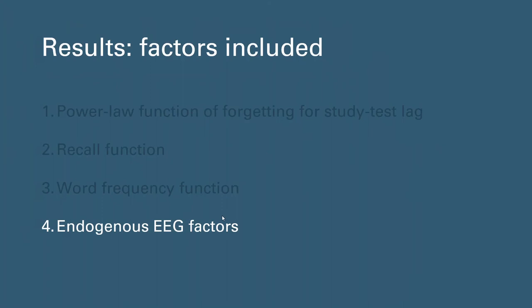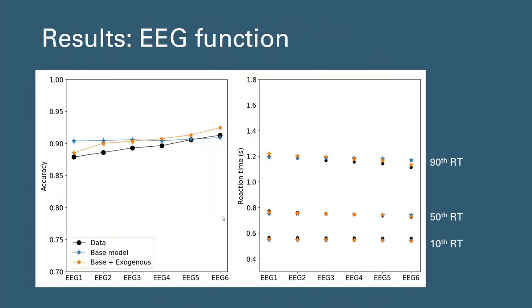As for the included EEG variables as endogenous sources of evidence, we sorted the data according to the computed EEG variables, and we can see that performance changes with the variable, and this trend was also captured by the EEG factors included in trial by trial model fitting.